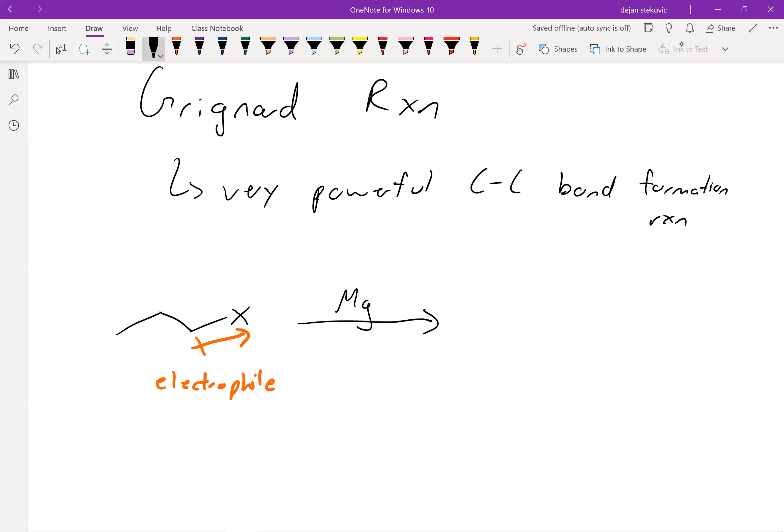However, what we can do is we can add magnesium to this compound. And when you add magnesium, what it does is it inserts itself in between the carbon and halogen bond and flips the polarity of this bond. So now what we have is actually the carbon is partially negative instead of being partially positive. And what this does is it makes it a really good nucleophile. Also a pretty strong base as well.